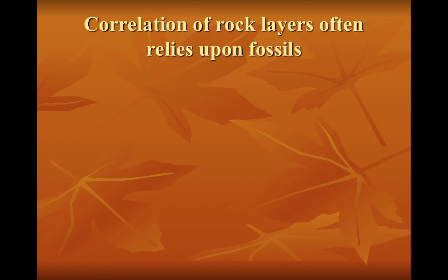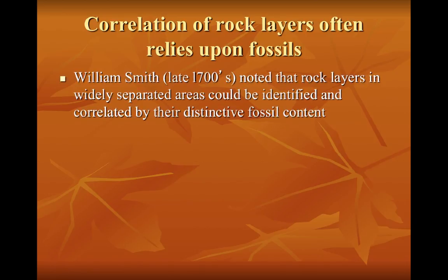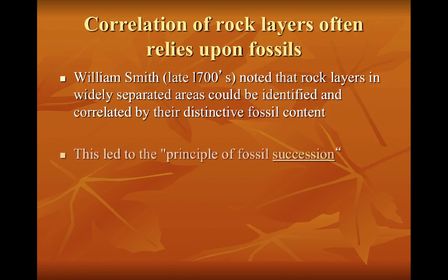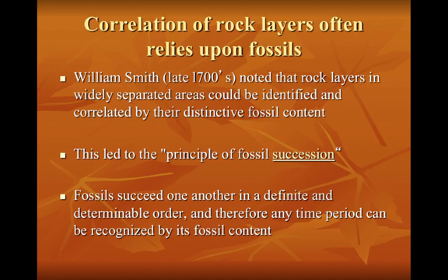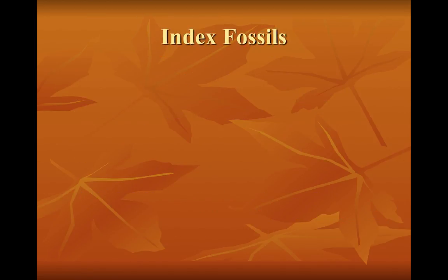Correlation of rock layers also often relies upon fossils, because we have many rock types that look the same. There was a man named William Smith who lived in the late 1700s, and he noticed that rock layers that were widely separated could be correlated or identified by their distinctive fossil contents. This led to the principle of fossil succession — fossils succeed each other in a definite and determinable order, and therefore any time period can be recognized by its fossil content. Fossil succession ties into the theory of evolution: our oldest fossils are the simplest, and as we continue in time, fossils get more complex. This led us to index fossils.